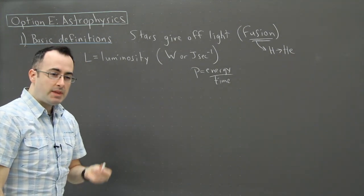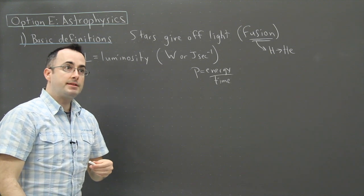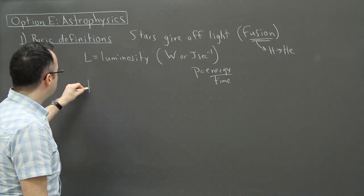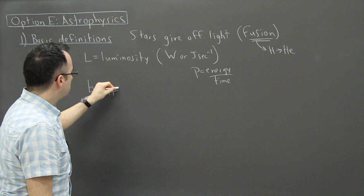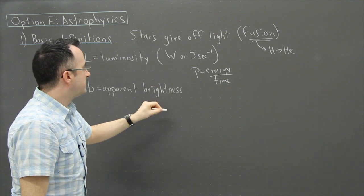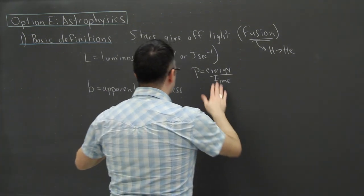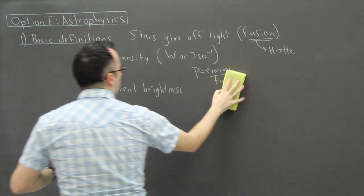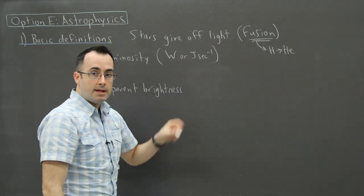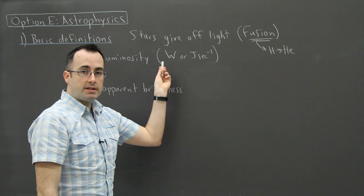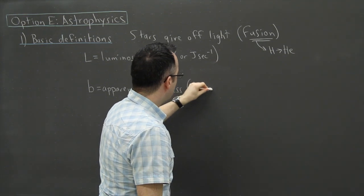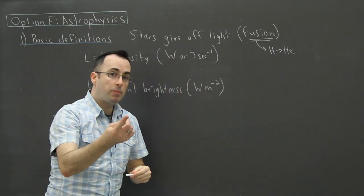The fact that stars are far away means that it doesn't actually appear so bright, so we have another quantity that we call B which is the apparent brightness. That's going to be the apparent brightness of a star and that's going to be measured in watts per meter squared. In other words, it's going to be the power per unit area.